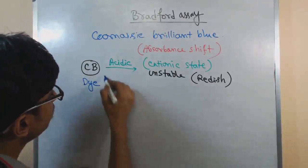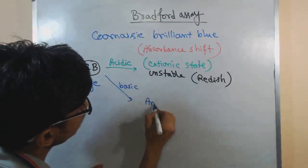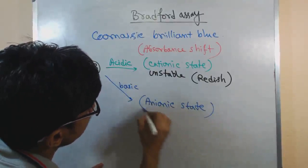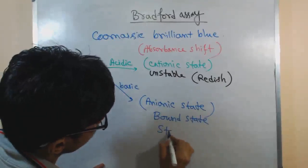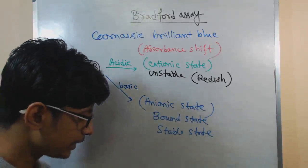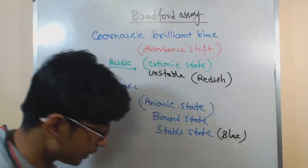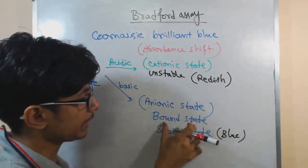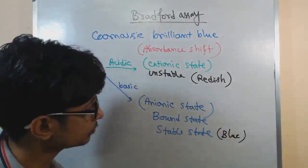On the other hand, if we place it in the basic condition, or we call it anionic state, this state is also called as a bound state and this is stable state. And the coloration in this state is blue. That is why it is called Coomassie brilliant blue, because actually the stable state condition for this dye gives us the color blue.